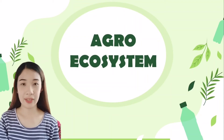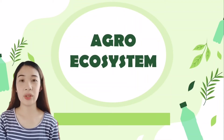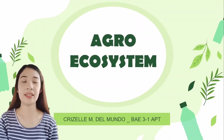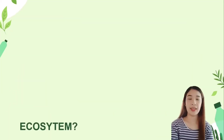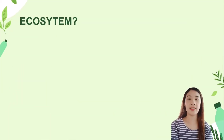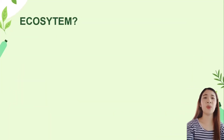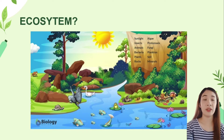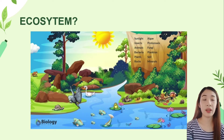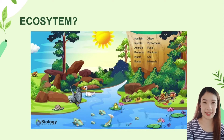Hello everyone! Now we're going to discuss about the agro-ecosystem. So what is an ecosystem? It is a community of living organisms in combination with the non-living components of their environment, interacting as a system.